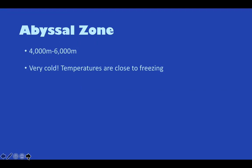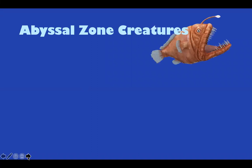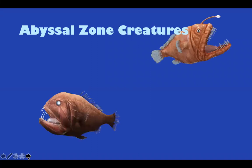The next zone is the abyssal zone, which goes from 4,000 to 6,000 meters. It is very cold — temperatures are close to freezing — and the pressure is very high, so we would not be able to survive without being crushed. Very few animals can survive despite the very cold temperatures and very high pressures. Some abyssal zone creatures include the anglerfish and the fangtooth. As we go deeper in the ocean there are fewer and fewer creatures, and it is pretty likely that many animals swim around for extended periods of time and rarely see other animals.